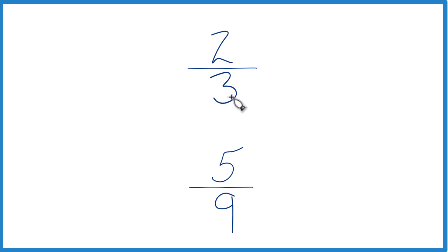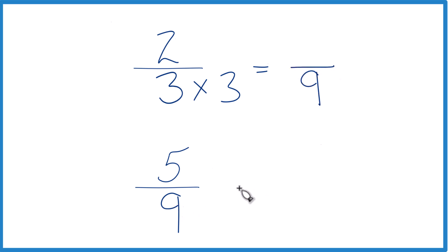The other way is find a common denominator. Right now we have three and nine, but if those were the same, we could compare the numerators and we'd know what our answer was. Let's do this. Let's take three times three, because three times three, that's nine. And we already have nine down here, so we're going to keep this the same, five-ninths.